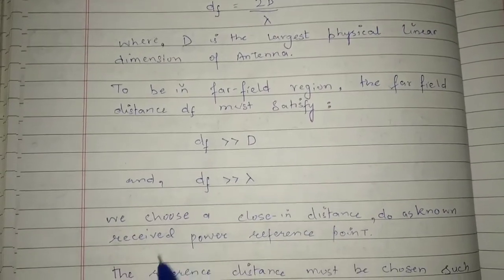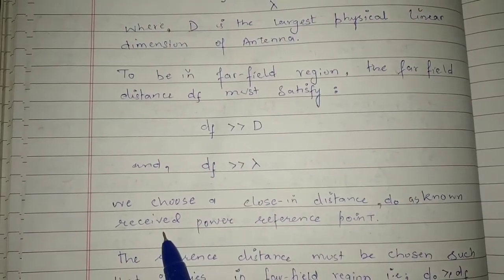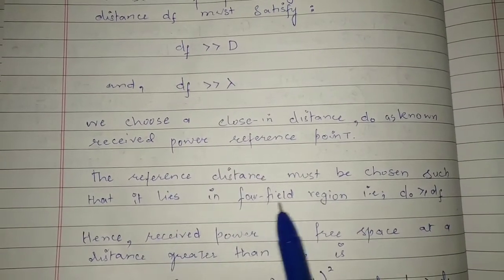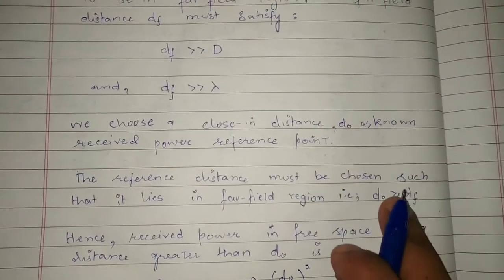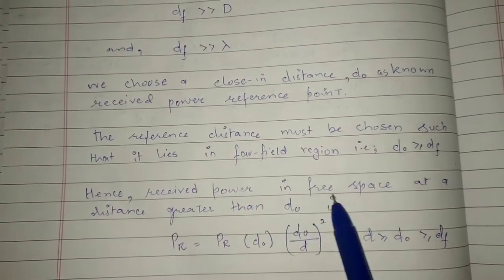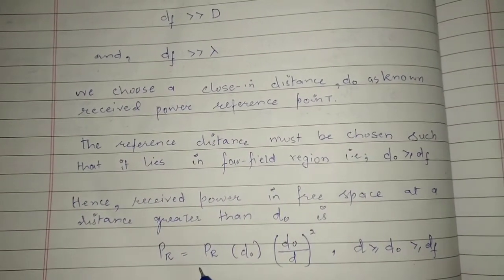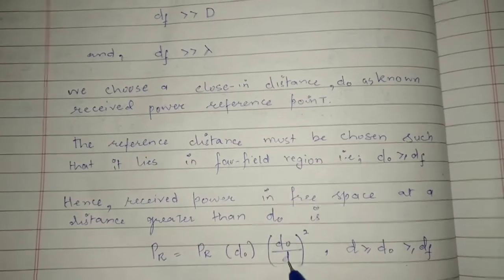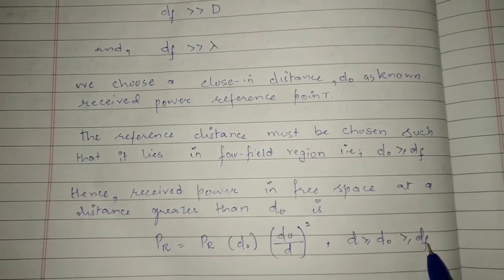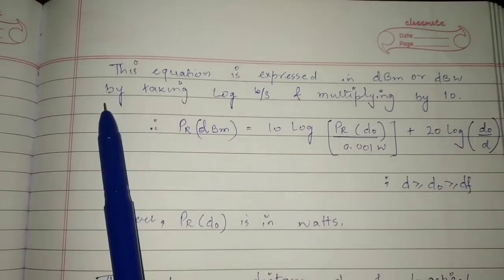We usually choose a close-in distance D₀ as a known received power reference point. The reference distance must be chosen such that it lies in the far field region, i.e., D₀ ≥ DF. Hence, the received power in free space at a distance greater than D₀ is given by PR(D) = PR(D₀) · (D₀/D)², where D ≥ D₀ ≥ DF.